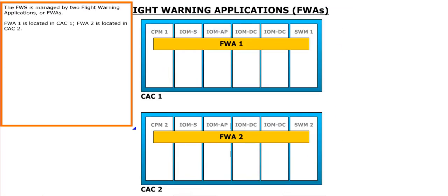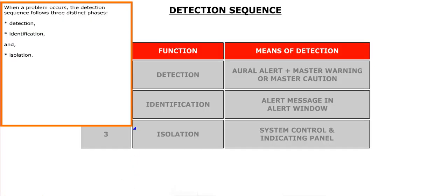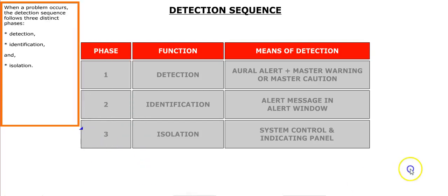The FWS is managed by two flight warning applications, or FWA. FWA-1 is located in CAC-1. FWA-2 is located in CAC-2. When a problem occurs, the detection sequence follows three distinct phases: Detection, Identification, and Isolation.